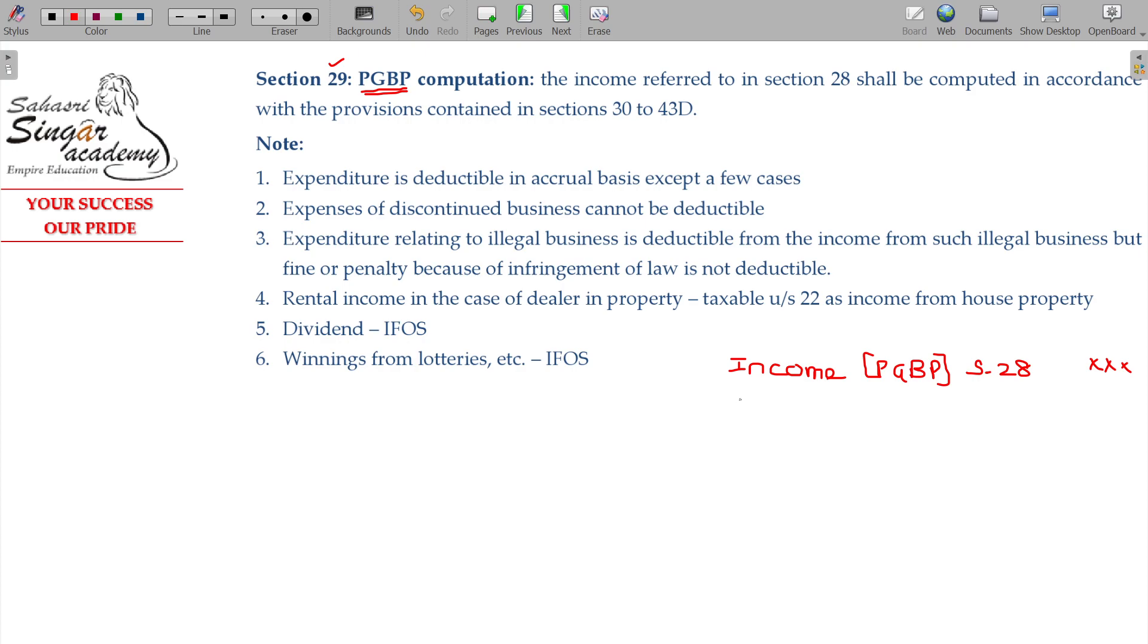You have to now adjust for all the expenses to be deductible or not deductible or carried forward given under Section 30 to 43D. After that, the value what you calculate is called PGBP. Section 29 is all about mode of computation.